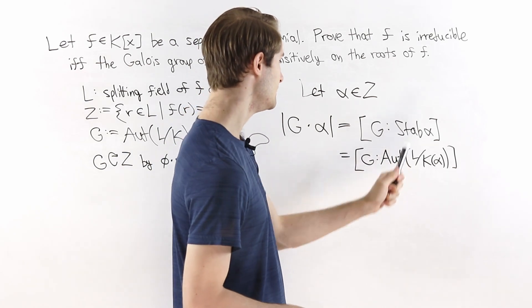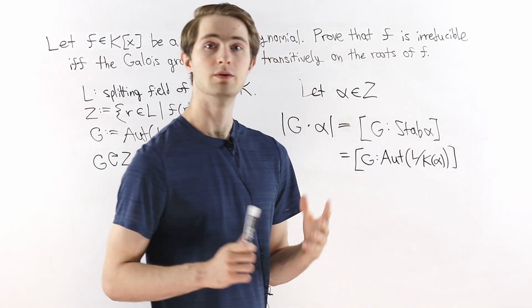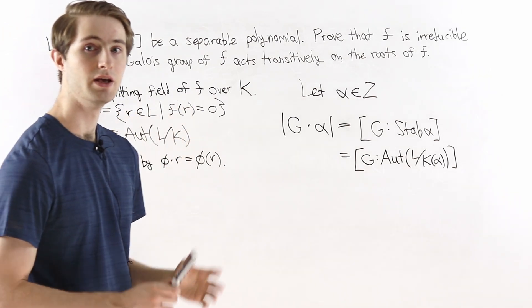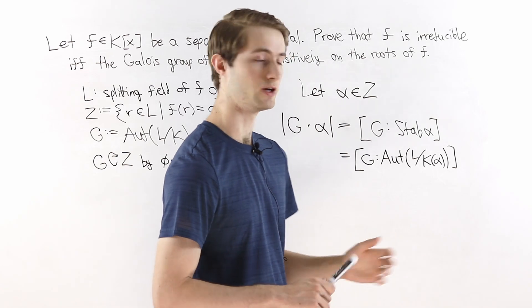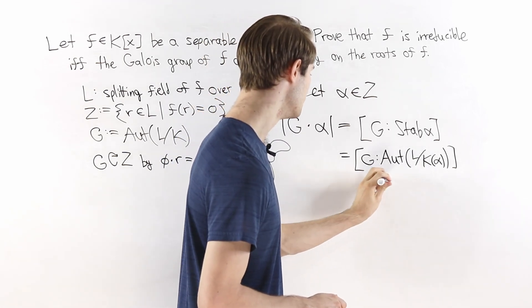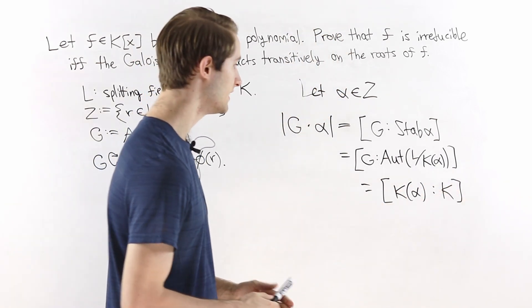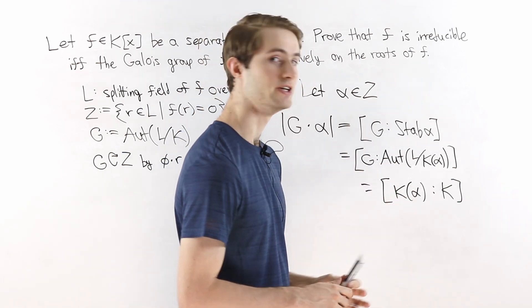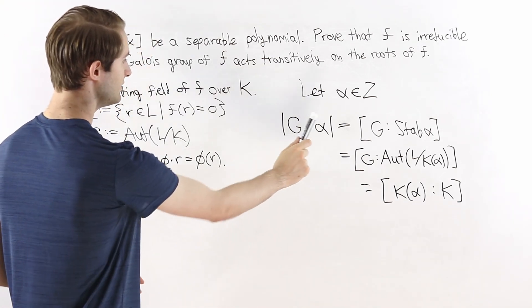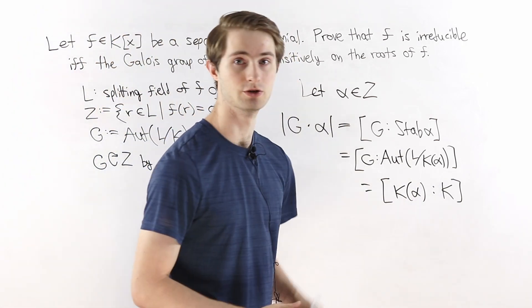The stabilizer of α equals the automorphism group of L over k(α). Applying a result from Galois theory — valid because L is the splitting field of f over k — the index of G modulo Aut(L/k(α)) equals the degree of the field extension k(α) over k. Putting this together, the size of the orbit of α under G equals the degree of the field extension [k(α):k].